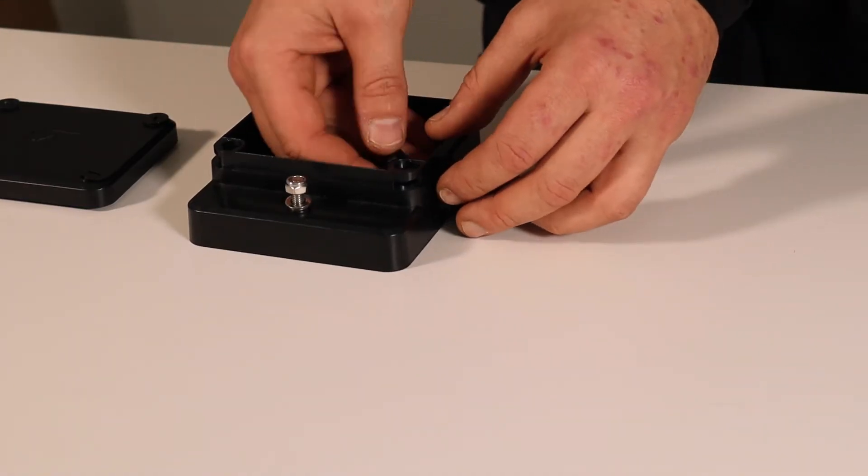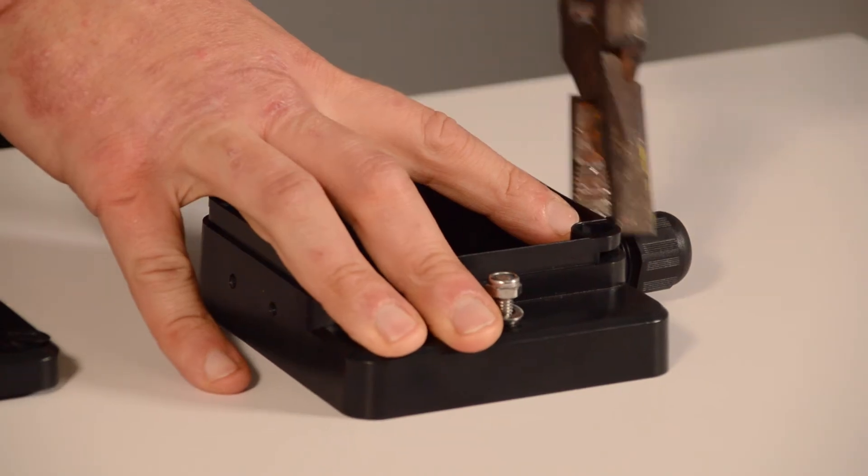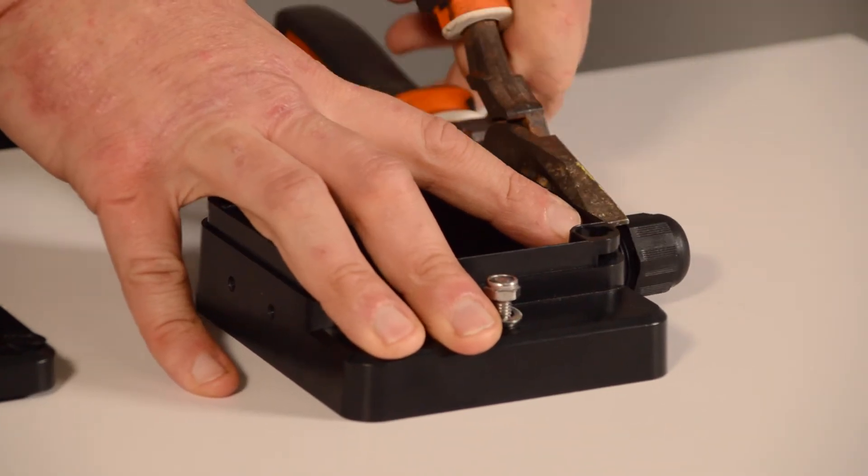Attach your 20mm compression gland to the flood box which will maintain the product's IP65 rating. Make sure the compression gland is tightened.